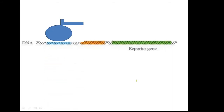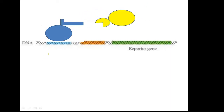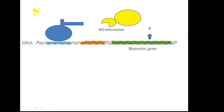As an example, suppose we use a lacZ reporter gene. If the bait and prey proteins are interacting, the reporter gene will be expressed. But if there is no interaction, the reporter gene will not be expressed. When cells are grown in media containing X-gal, no functional beta-galactosidase will be produced and they will give white colonies.